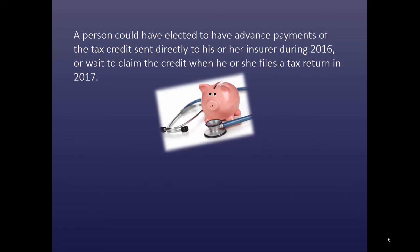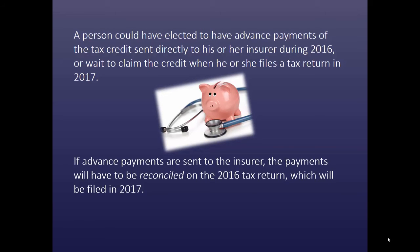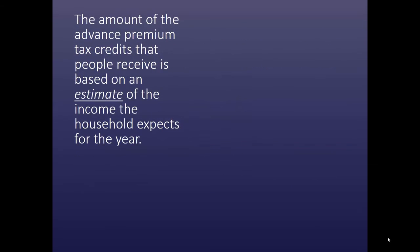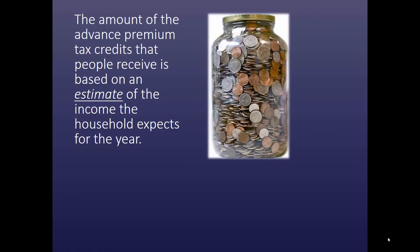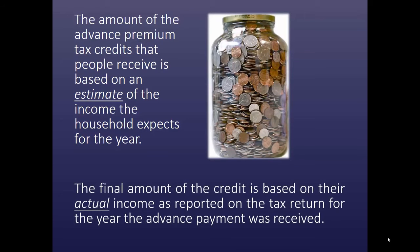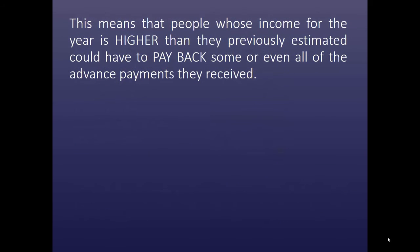A person could have elected to have advance payments of the tax credit sent directly to his or her insurer during 2016, or wait to claim the credit when he or she files a tax return in 2017. If advance payments are sent to the insurer, the payments will then have to be reconciled on the 2016 tax return, which will be filed in early 2017. The amount of the advance premium tax credits received is based on an estimate of the income the household expects to receive for the year, and the final amount of the credit is based on the actual income as reported on the tax return. People whose income is higher than estimated could have to pay back some or all of the advance payments they received.